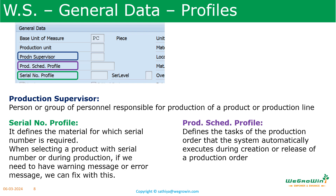Then we have the serial number profile. The serial number profile defines the material for which a serial number is required. For any material, we may use serial numbers, and at that time we will use this profile. When selecting a product with a serial number, or during production if you want to issue them, and if you want to have some warning message or error message, we can configure all these details in the serial number profile.